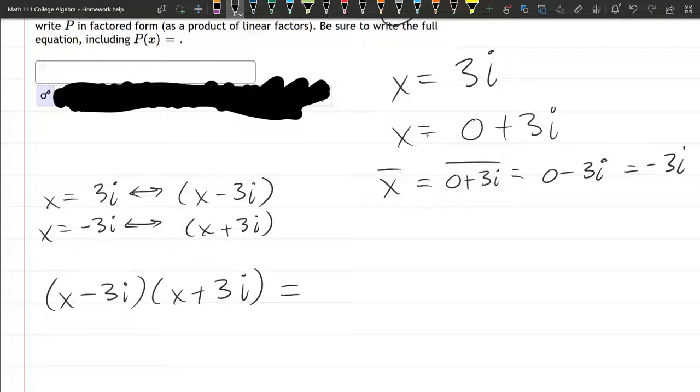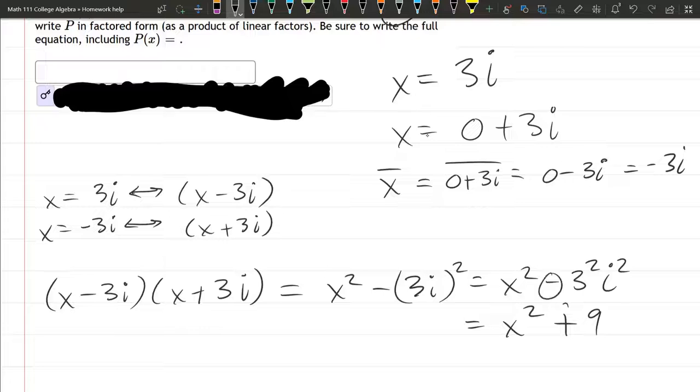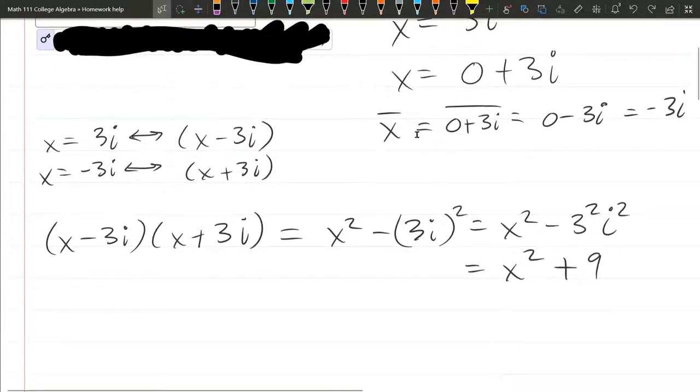So we multiply here. We are multiplying conjugates. That means the outside inside terms will cancel. The outside term is 3xi, the inside term is negative 3xi, and they're going to cancel out. So we just have x squared minus 3i squared, which is x squared minus 3 squared i squared, and that is x squared—3 squared is 9, so it's x squared plus 9. The i squared is negative 1, and that turned the minus into the plus. So we have x squared plus 9.